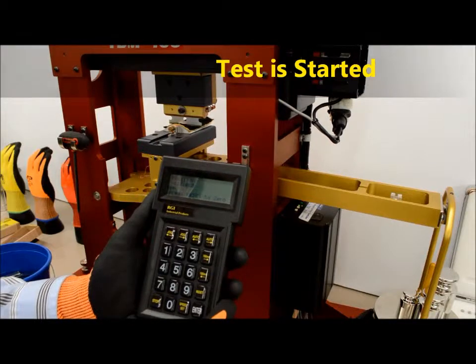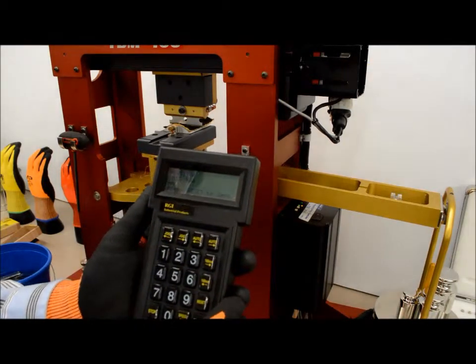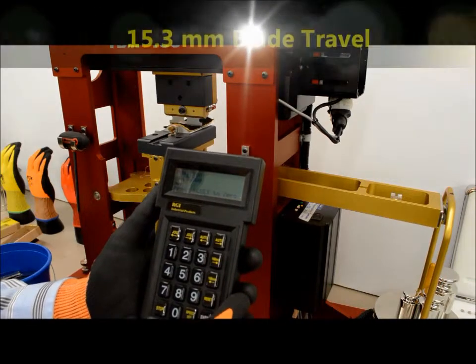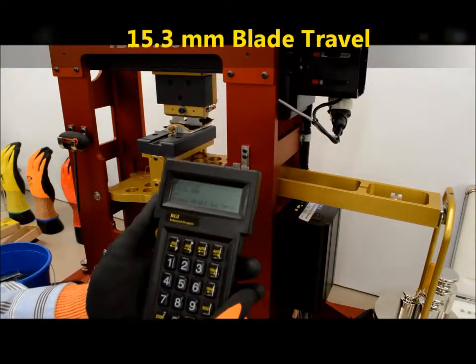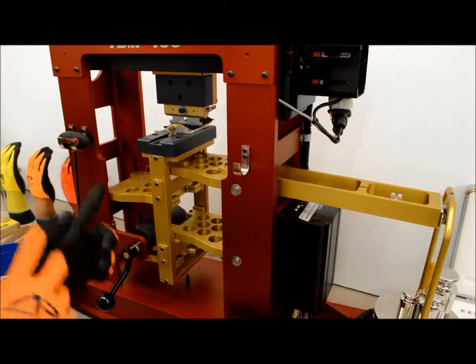We're measuring the millimeters until it's cut through, which ends up being 15.3 millimeters. That's the blade travel until the razor blade has cut through the glove material, made contact with the copper strip, and is shorted out.